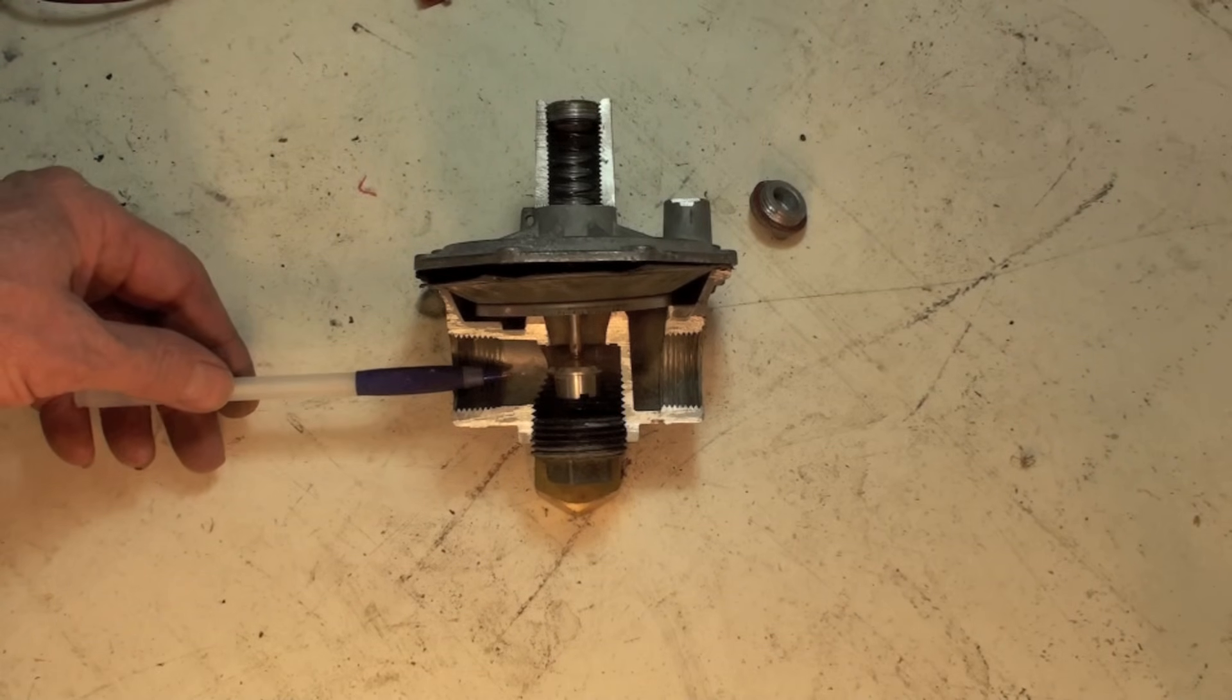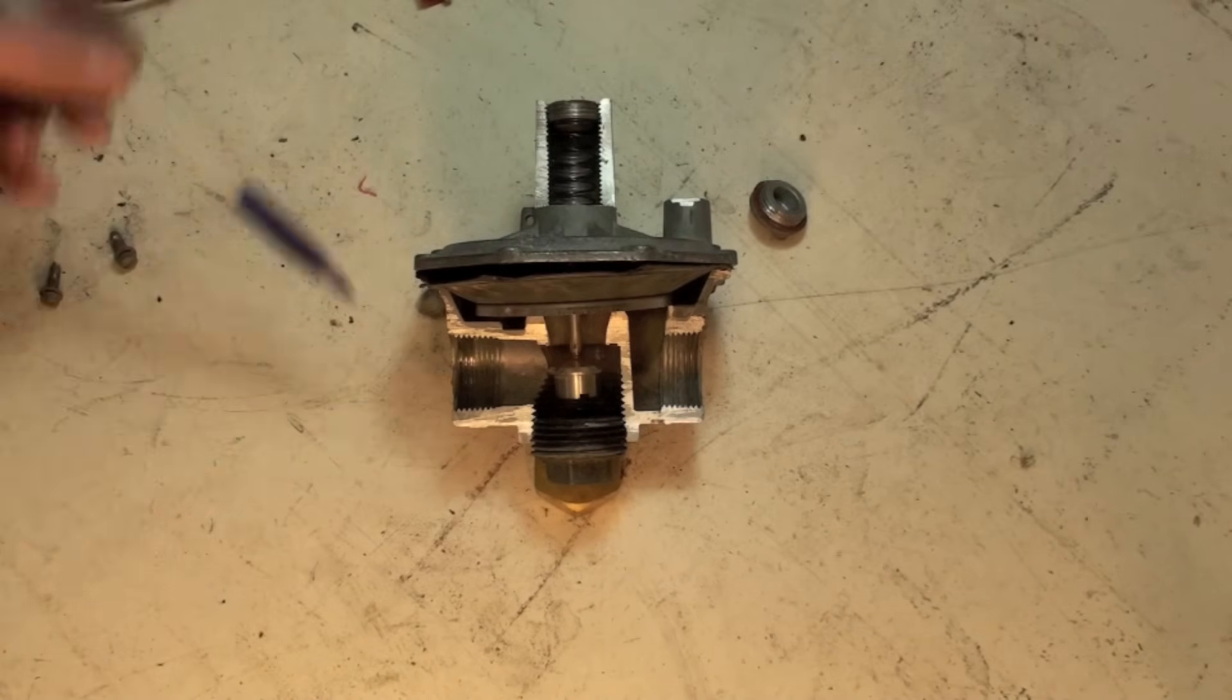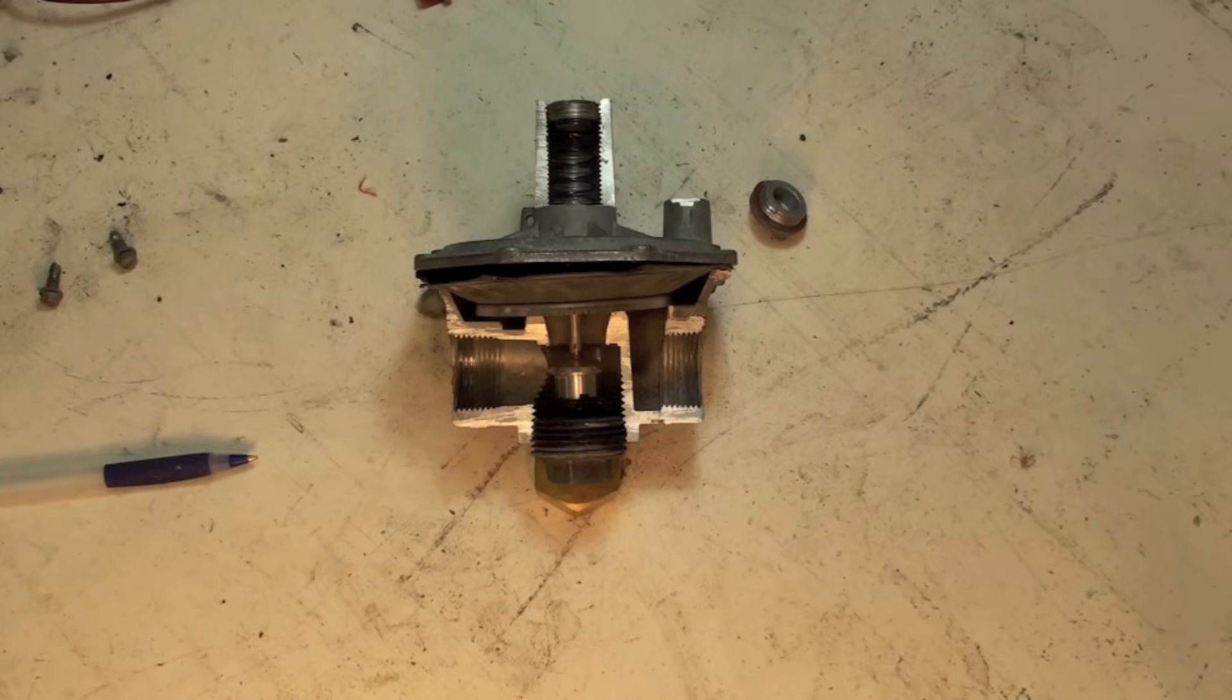The gas comes in here and is regulated out here. Probably coming in about 7 inches of water column here, coming out here from 1 to 4 inches there depending on the equipment.